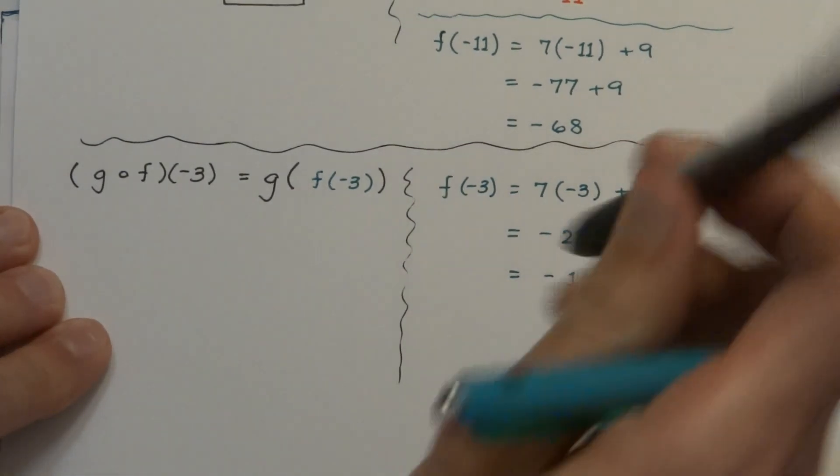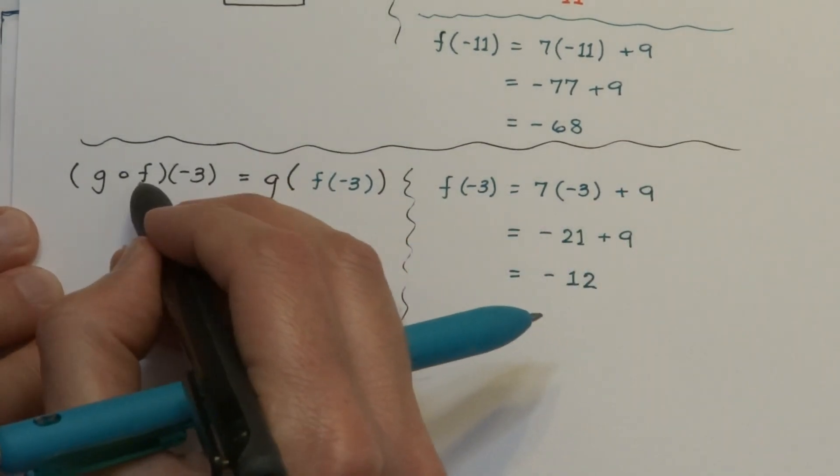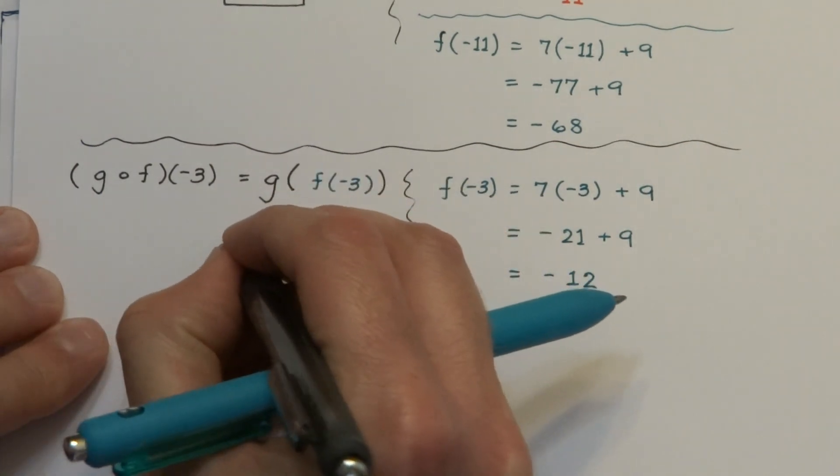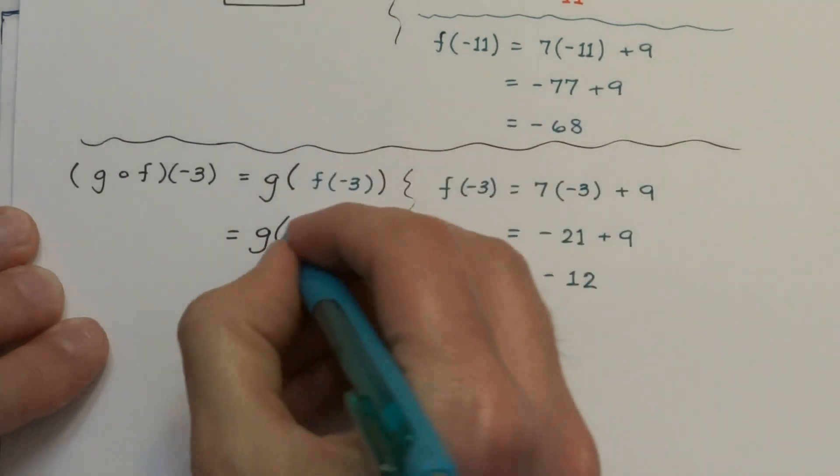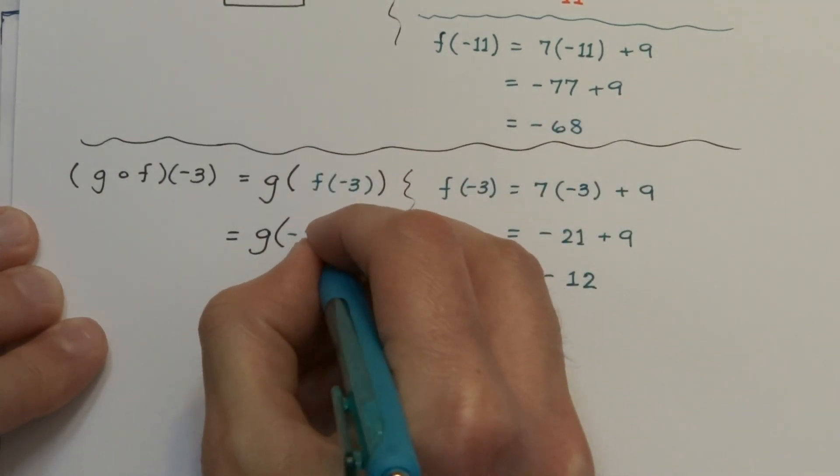Keep in mind that negative 12 is not the end result. See, the negative 3 went into f to give you negative 12, and now we're going to plug the negative 12 into our function g.